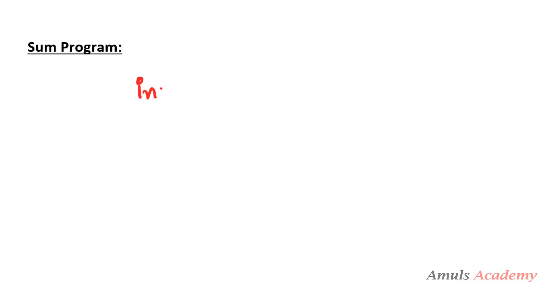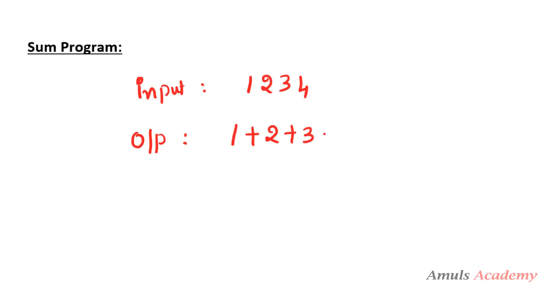Hello guys and welcome to Python programming tutorials by Amuls Academy. In this tutorial we are discussing a program where we want to find out the sum of all digits in the entered input. The input will be an integer number like 1, 2, 3, 4 and we want the output as the sum of these digits: 1+2+3+4 = 10.